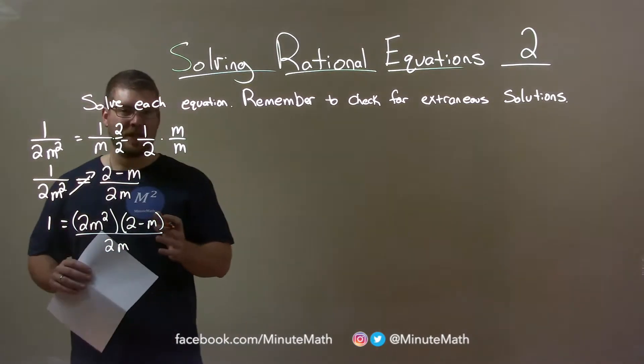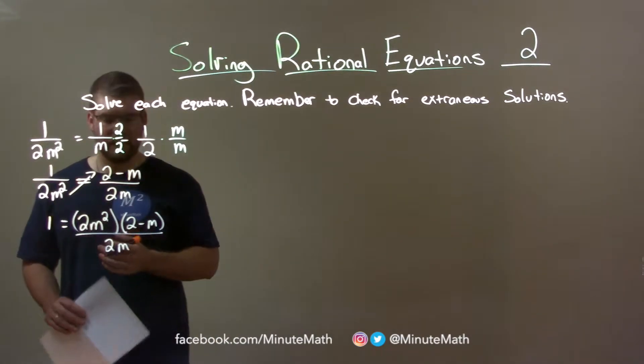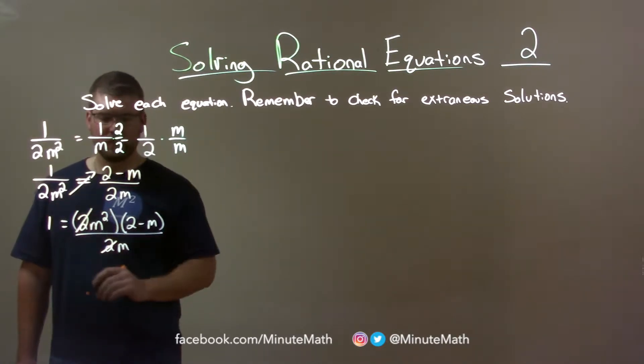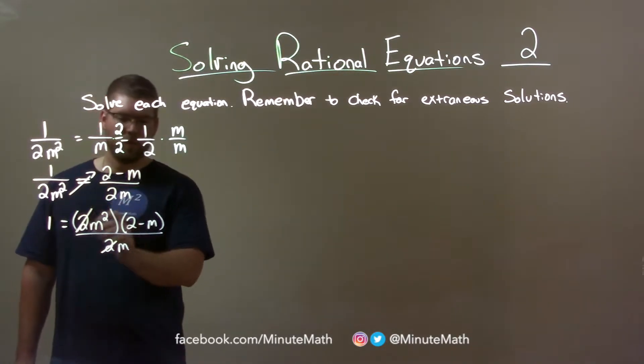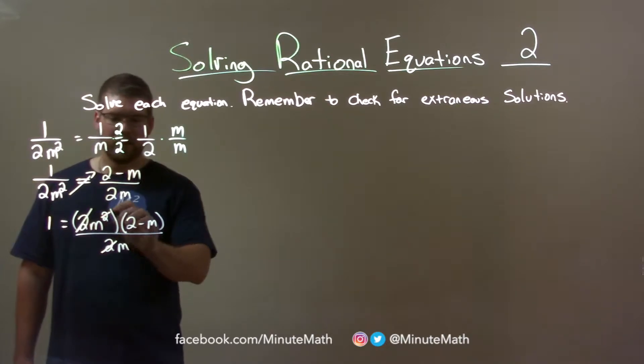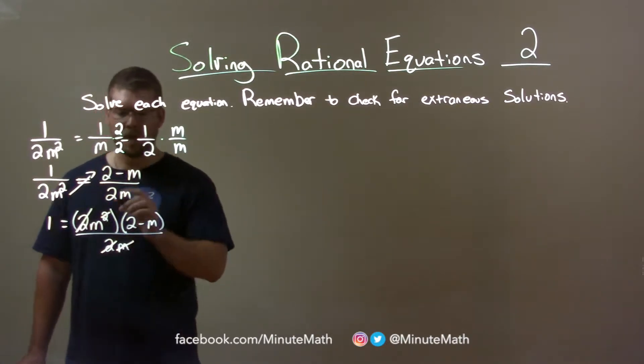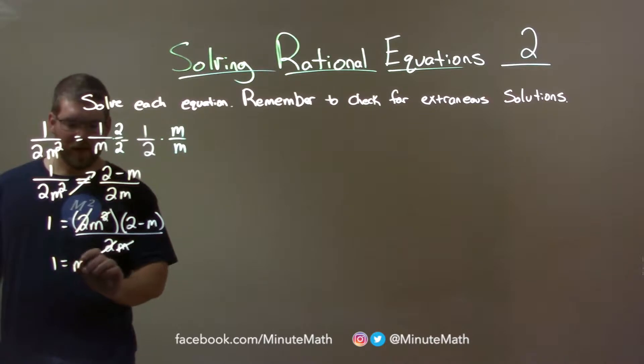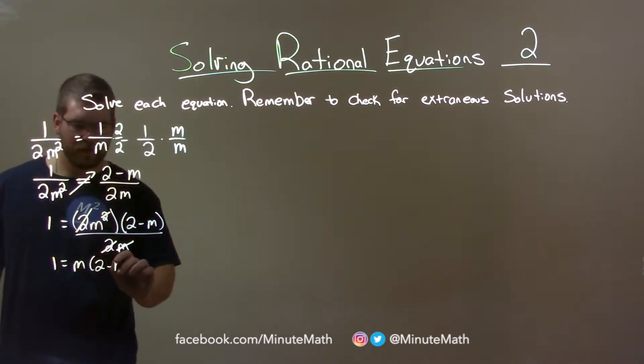And what this allows me to do is kind of cancel some things out of it. I like to keep everything separate and cancel what I can. The 2's will cancel here, and m squared gets canceled out with this m. So now we're left with just 1 equals m times 2 minus m.